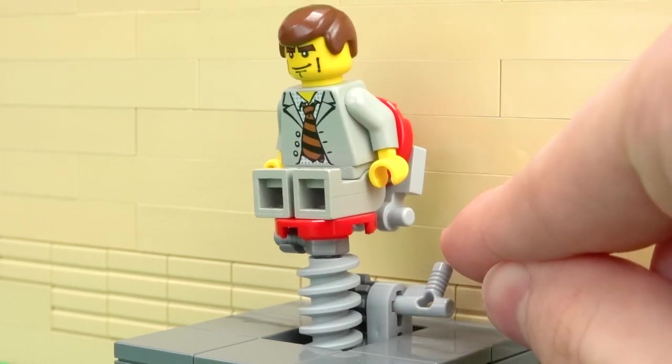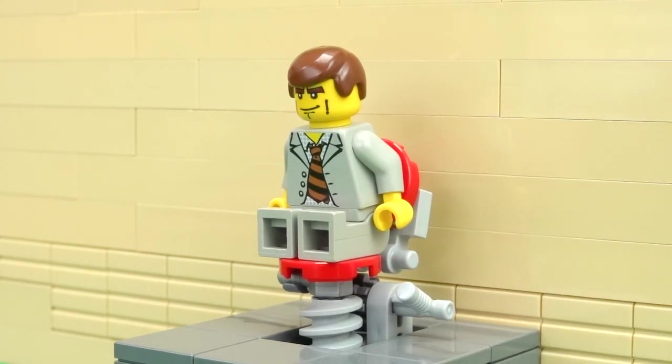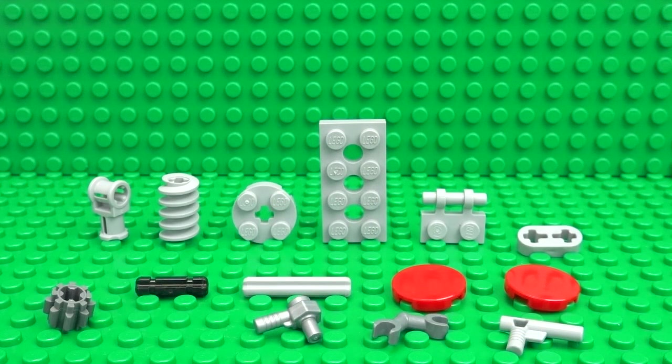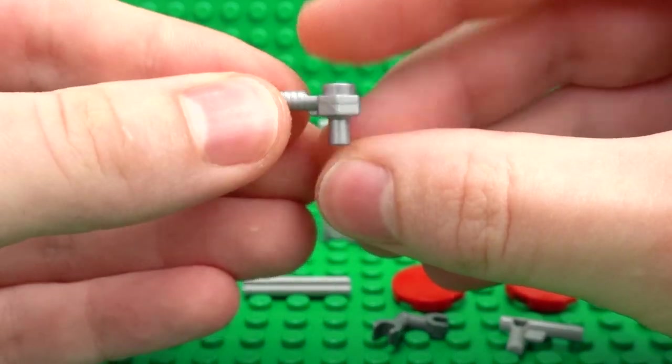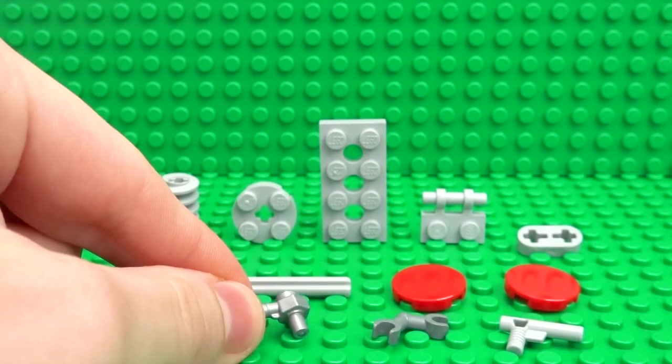So let's take a look at how to build it. Here's everything you're going to need and I'll leave a link to where you can get the rarer parts which I've used such as this silver piece in the description below, so check that out in case you don't already have that piece.